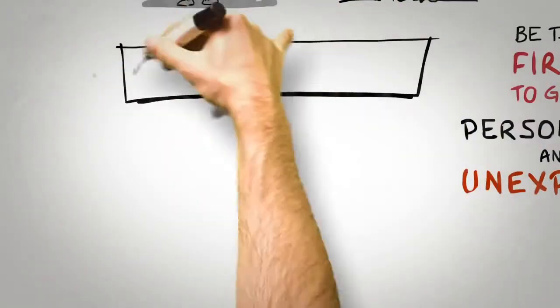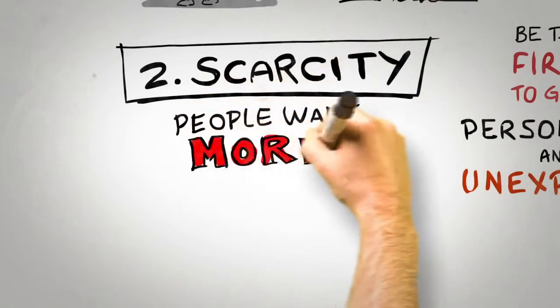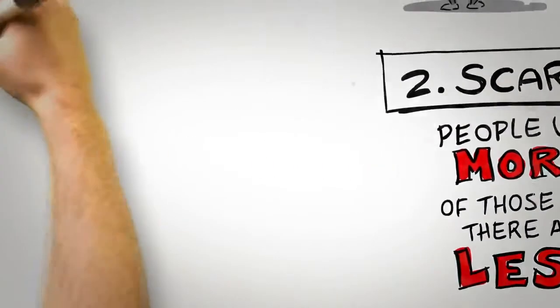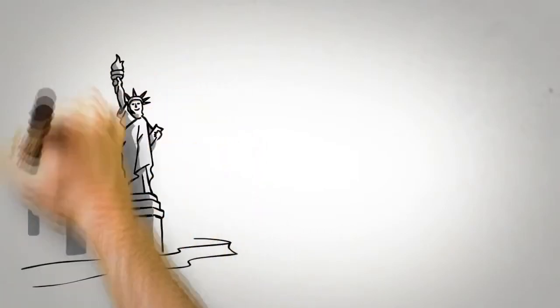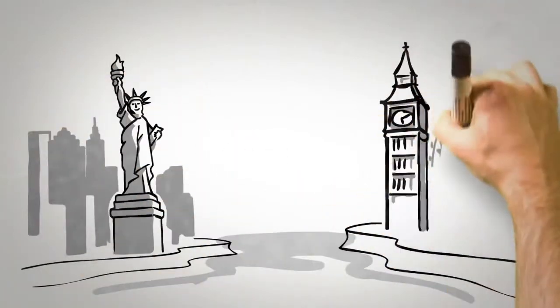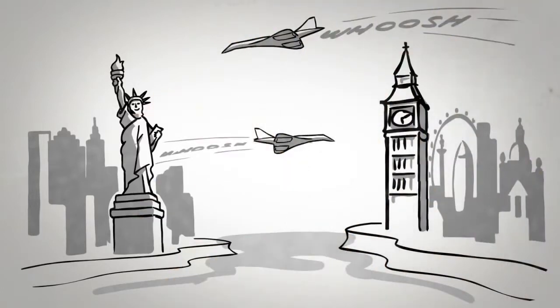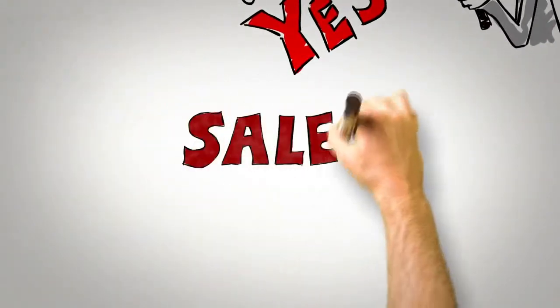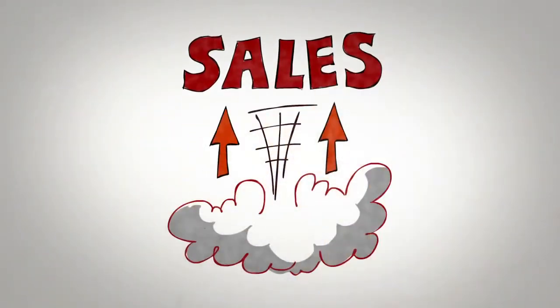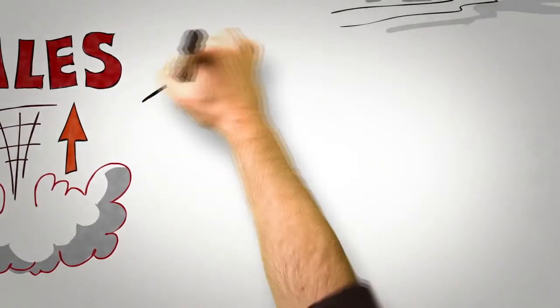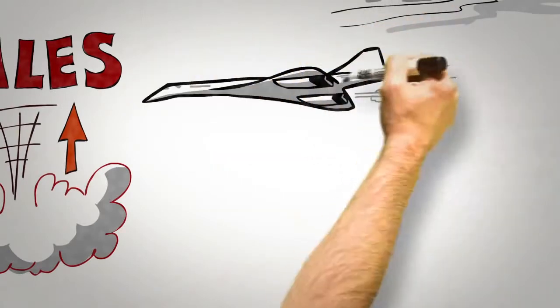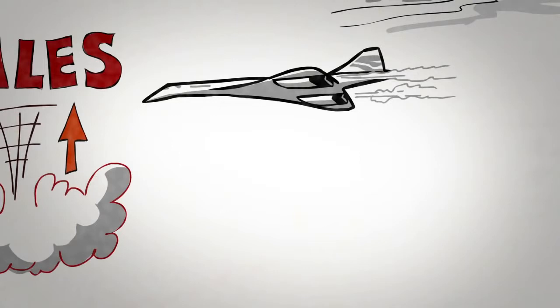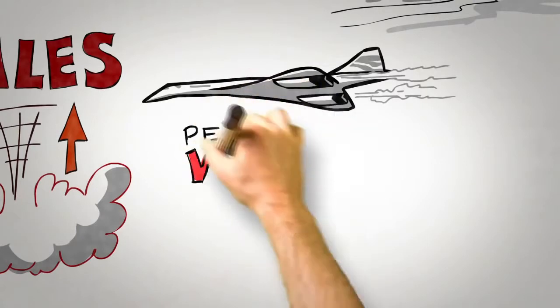The second universal principle of persuasion is scarcity. Simply put, people want more of those things they can have less of. When British Airways announced in 2003 that they would no longer be operating the twice-daily London-New York Concorde flight because it had become uneconomical to run, sales the very next day took off. Notice that nothing had changed about the Concorde itself. It certainly didn't fly any faster, the service didn't suddenly get better, and the airfare didn't drop. It had simply become a scarce resource, and as a result, people wanted it more.